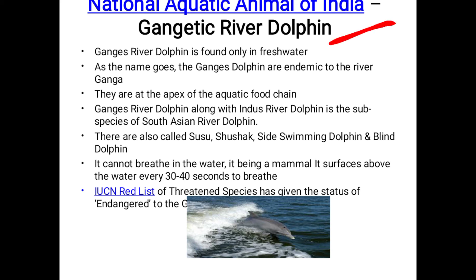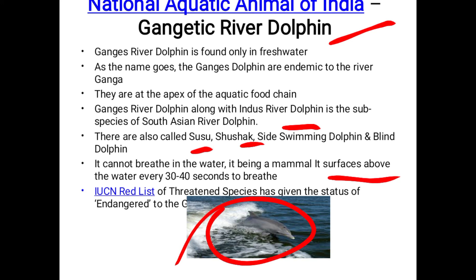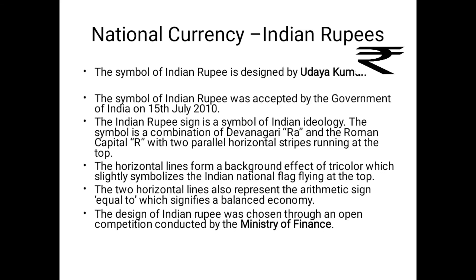Next is the national aquatic animal. The Gangetic river dolphin is the national aquatic animal of India. As the name suggests, this animal lives only in fresh water, specifically in the Ganga river. The Ganga river dolphin along with the Indus river dolphin is a subspecies of the South Asian river dolphin. This Gangetic river dolphin is also called Susu or blind dolphin or swimming dolphin. Being a mammal, it cannot breathe underwater and surfaces every 30 to 40 seconds to breathe. The IUCN Red List has given it the status of endangered.